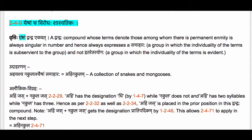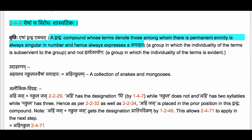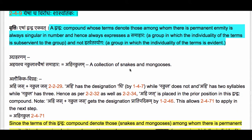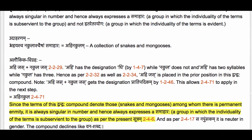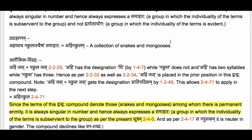The Vritti is very simple. The meaning of the Sutram is: a Dvandva compound whose terms denote those among whom there is permanent enmity is always singular in number, and hence always expresses a Samaharaha and not Itaretarayogaha. The example here is Ahayashcha Nakulashcha, whose Samaharaha equals Ahinakulam — a collection of snakes and mongooses.